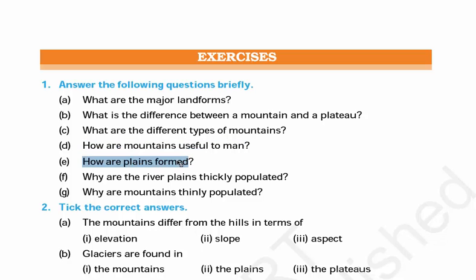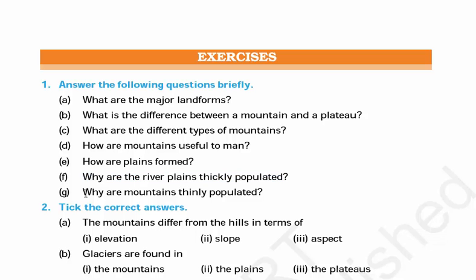Fifth question: How are plains formed? Plains are formed usually by running water. When a river runs continuously, that place gets eroded and all the soil is taken away, leaving behind a plain. Why are river plains thickly populated? River plains are thickly populated because they are very fertile for cultivation and irrigation, and populations reside there because they get to carry out their work and also have access to the important resource of water. Last question: Why are mountains thinly populated? Mountains are not ideal places to stay because natural calamities such as earthquakes, land drift, and cloudbursts are likely to occur.